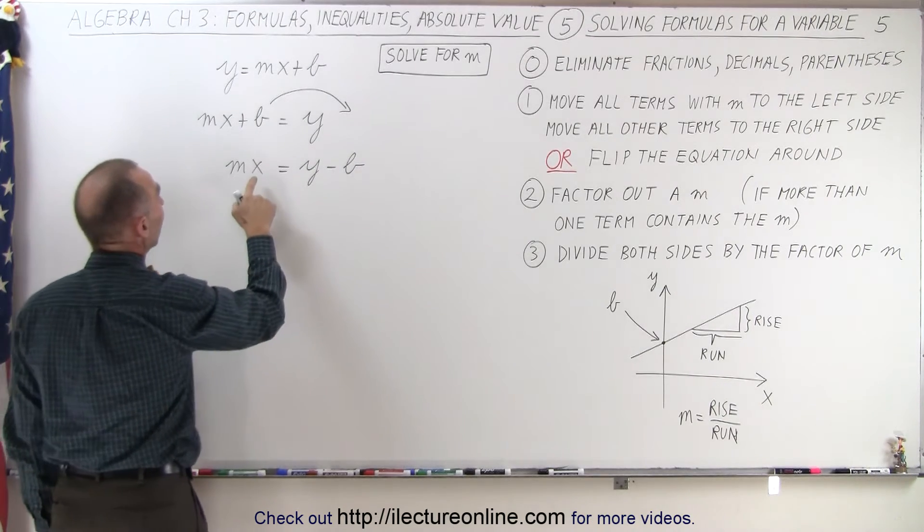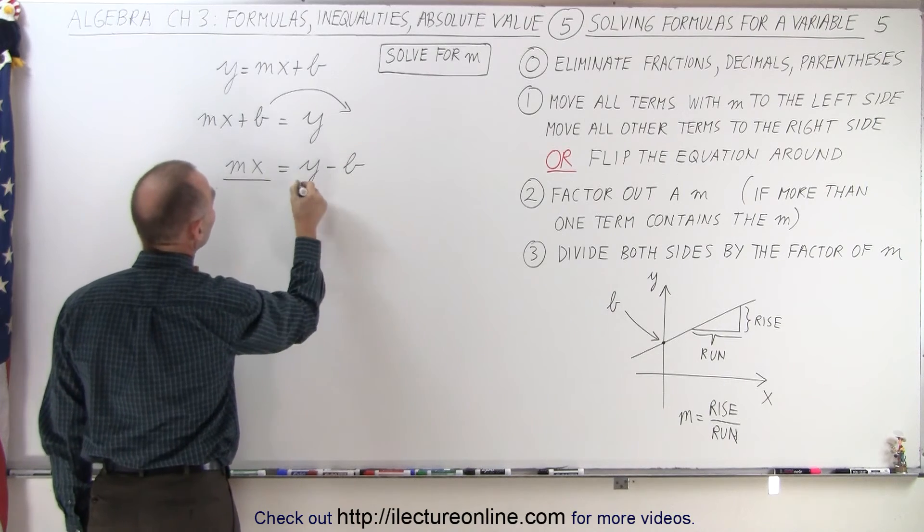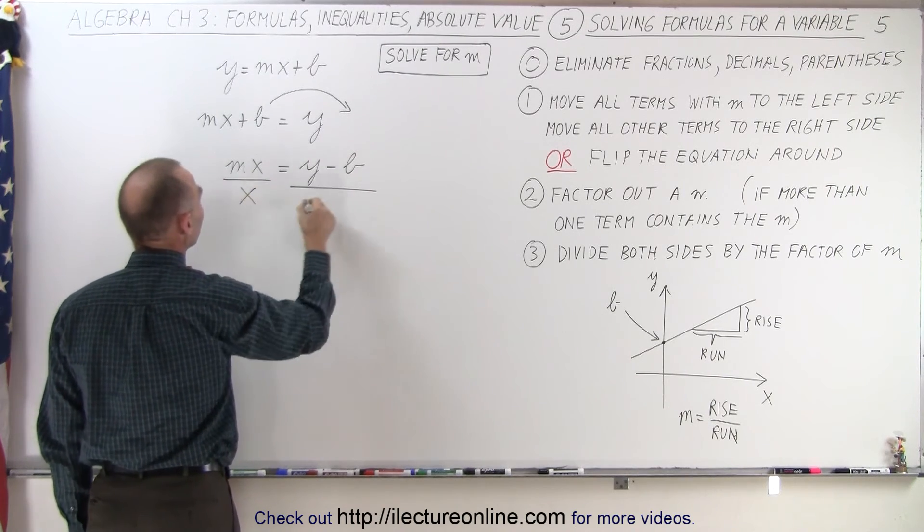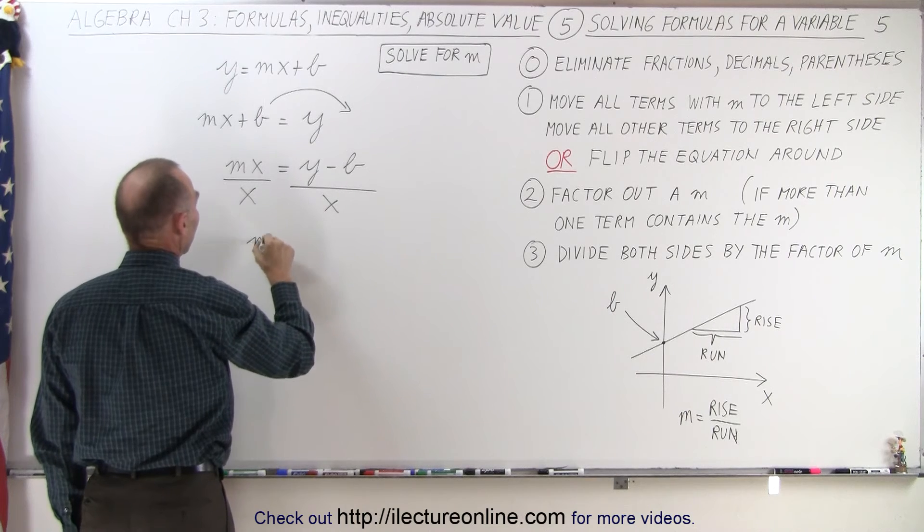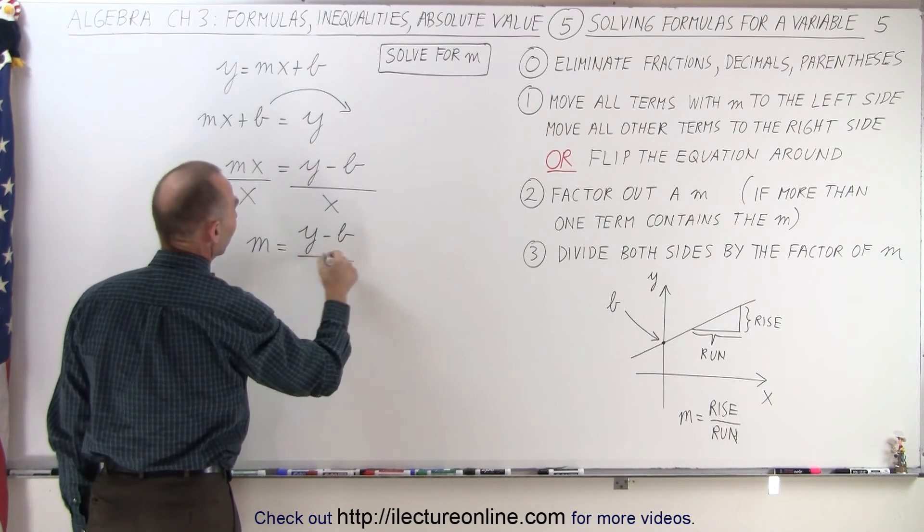And finally, since x is the factor of m in this case, I'm going to divide both sides of the equation by x. The x is cancelled out on the left side. I end up with m is equal to y minus b divided by x.